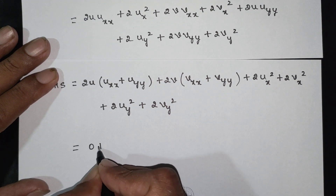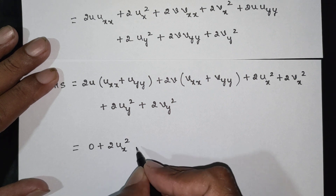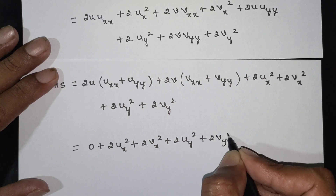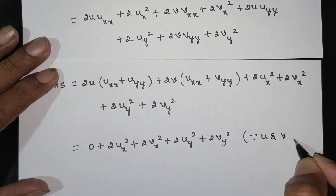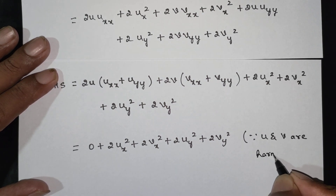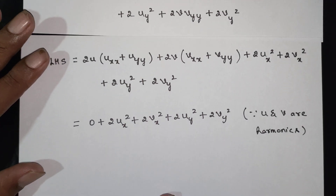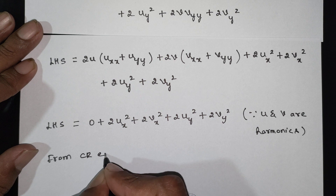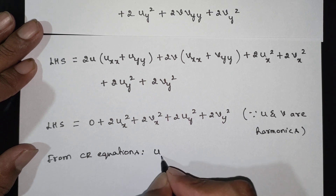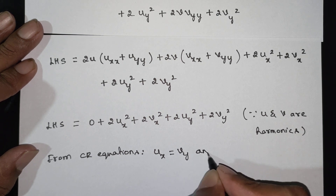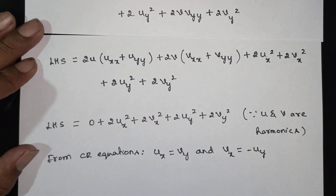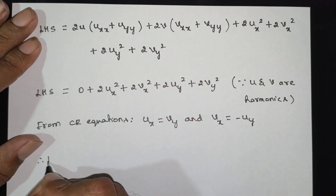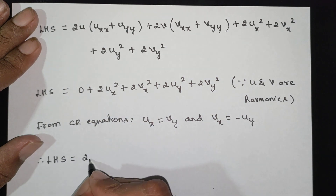Applying the harmonic conditions: uxx + uyy = 0 and vxx + vyy = 0. Therefore the terms 2u(uxx + uyy) and 2v(vxx + vyy) both vanish, leaving LHS = 2ux² + 2vx² + 2uy² + 2vy².